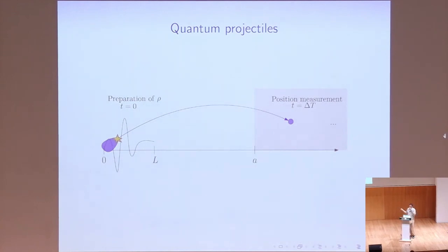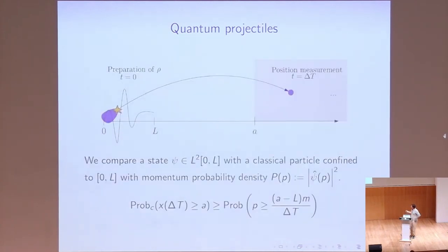what's the best thing? So if we have a particle, the best thing classically that we can do is put the particle here at the rightmost point and hope that it has enough momentum to get there in the time that we have. So we have a probability distribution for the momentum. The classical probability is this.